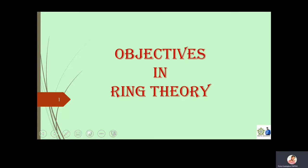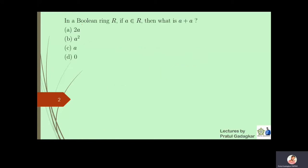In this video we discuss some more objectives in ring theory. The first question is: in a boolean ring, what is the value of a plus a? In a boolean ring where x squared equals x for all x, you can prove that x plus x always equals zero for all x in that boolean ring. This implies that 2x is always equal to zero, which tells us that the correct option is zero — so in a boolean ring, a plus a will always be equal to zero.